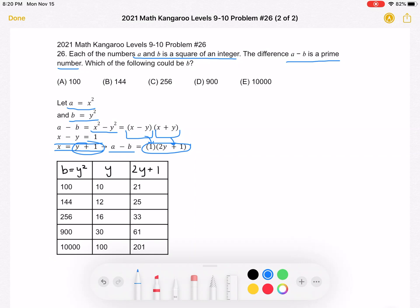So now we can use the answer choices to try to figure out what B can be equal to. So if B is equal to 100, then y is equal to 10, and 2y plus 1,